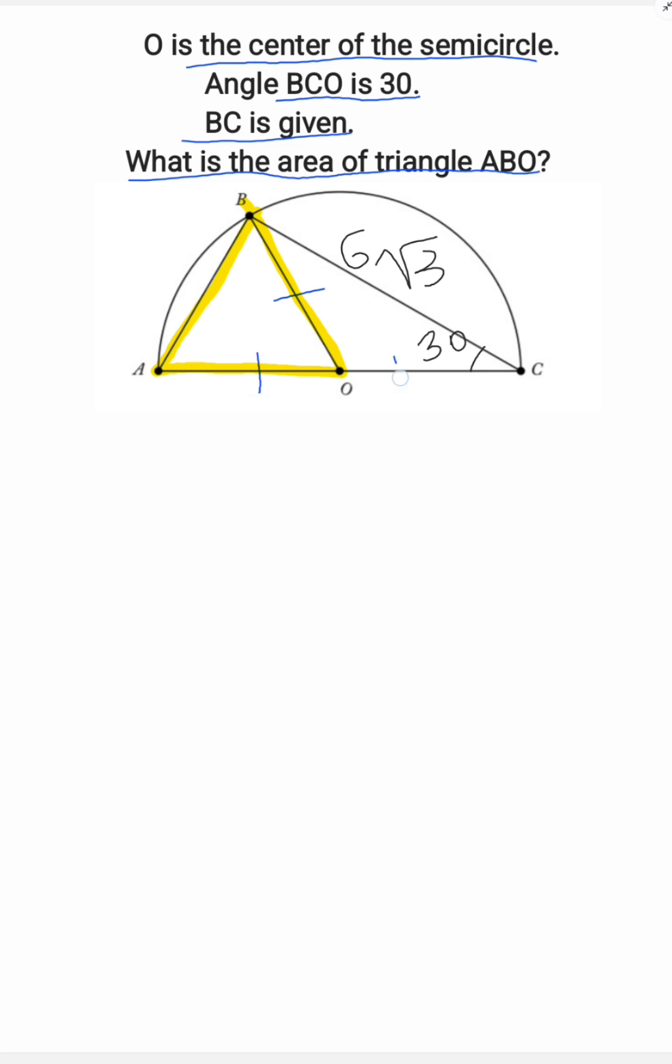These three sides are radii of the semicircle. They are the same. This one is 30 degrees, this one is 120 degrees, and this one is 60 degrees. We can find that the two other angles are also 60. So ABO is an equilateral triangle.